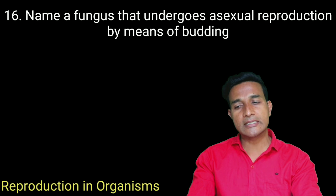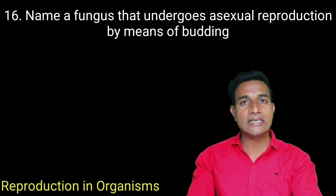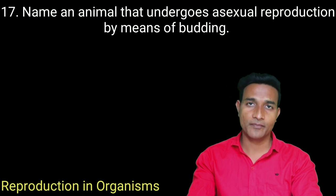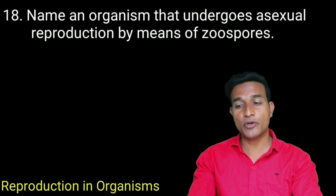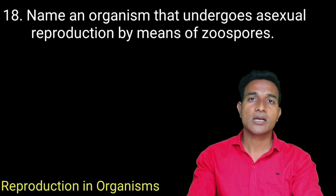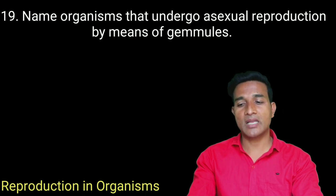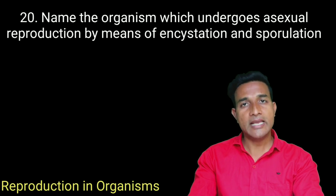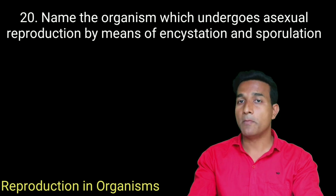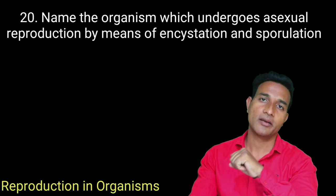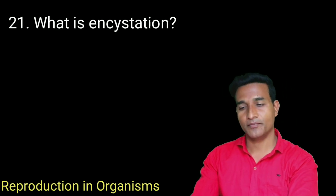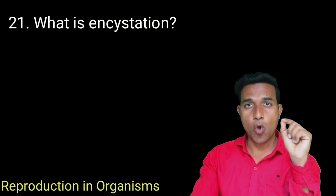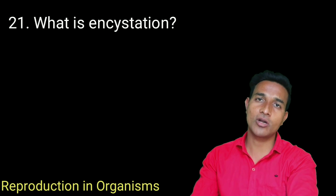Name a fungus that undergoes asexual reproduction by means of budding — that is yeast. Name an animal that undergoes asexual reproduction by means of budding — Hydra. Name an organism that undergoes asexual reproduction by means of zoospores — Chlamydomonas. Name the organism that undergoes asexual reproduction by means of gemmules — sponges. Name the organism that undergoes encystration and sporulation — amoeba. During unfavorable conditions, the amoeba withdraws its pseudopodia and produces a thick wall around the body, called a cyst; the process is called encystration.